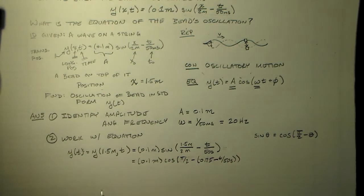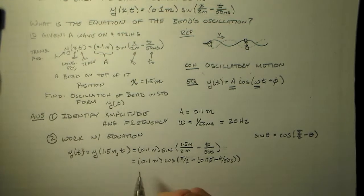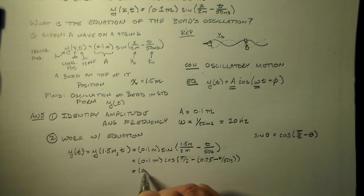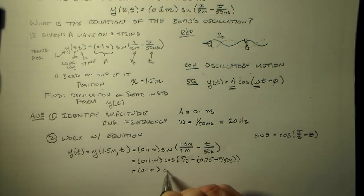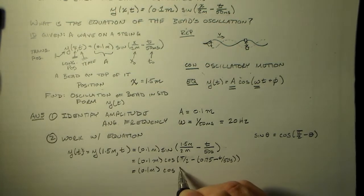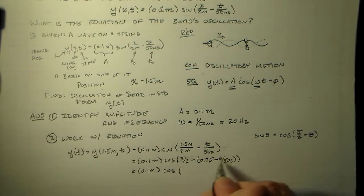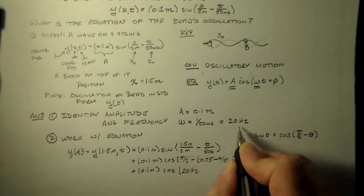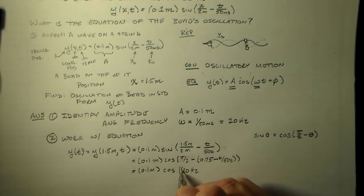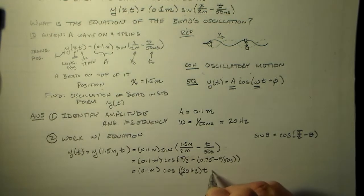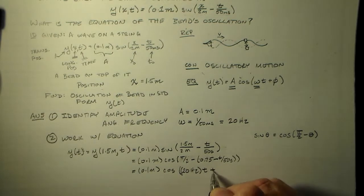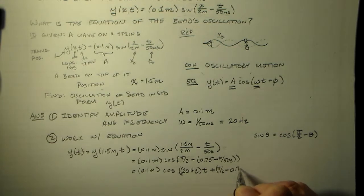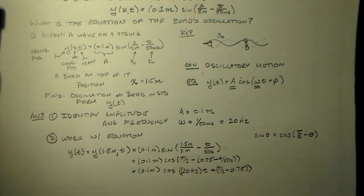So we now just rearrange all that. We have 0.1 meters. Cosine of... minus minus is plus. So we have 20 hertz. Right there. Times t minus or plus π/2 minus 0.75. And that's probably good enough. But we can simplify it just a tiny bit more.